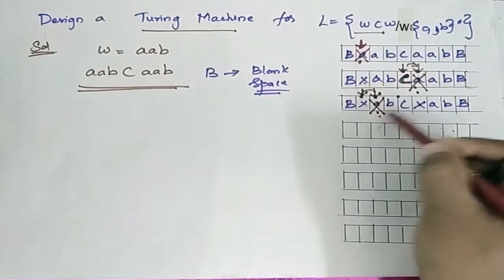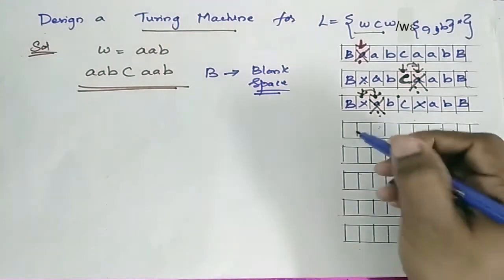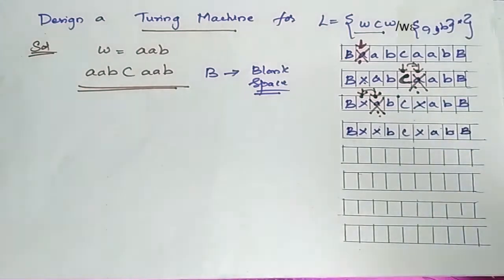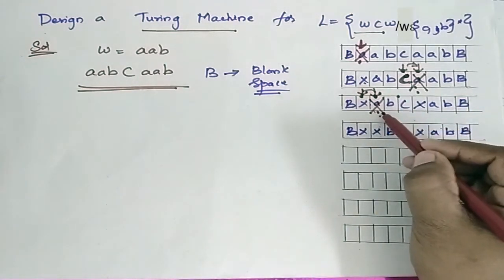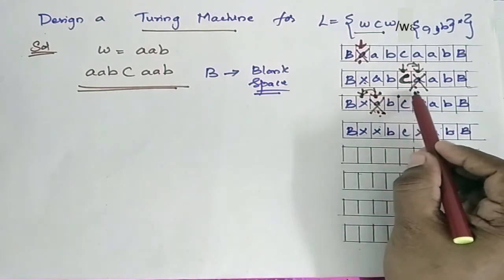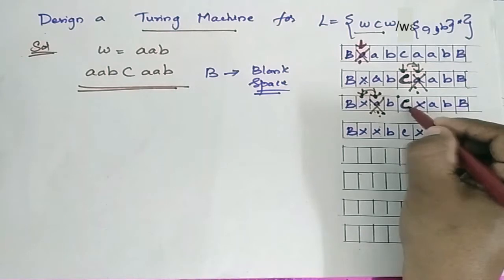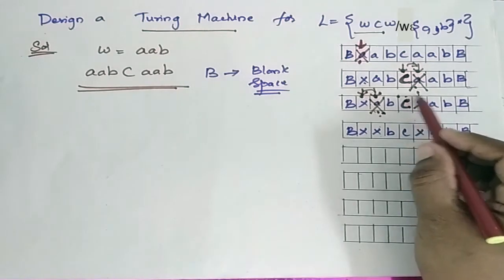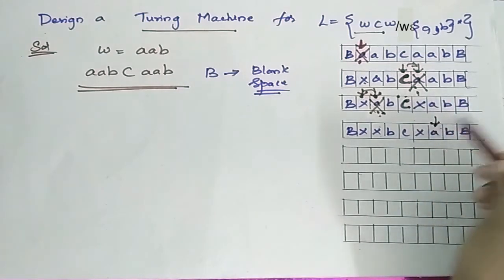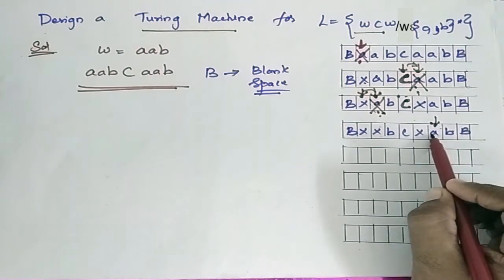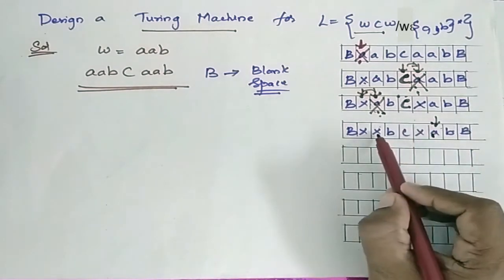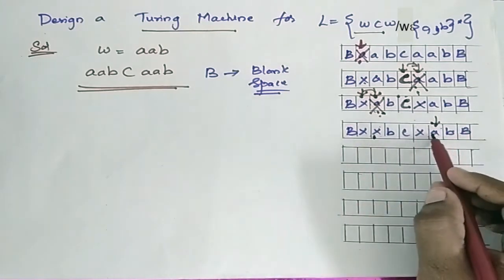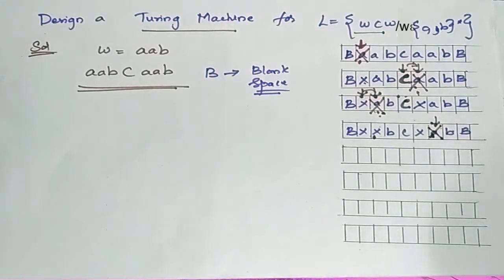Once the tape header has encountered the X, it moves to the right and encounters the next A. This A is replaced by X. The tape header then moves right again, crosses C, and checks whether it comes across any A's or B's. If it finds the matching A, it is again replaced by X.